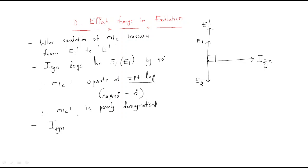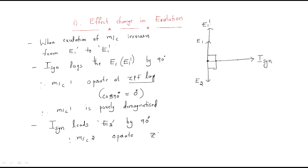The synchronizing current will be generated. Just observe — the synchronizing current leads E2 by 90 degrees. Using this we can write that machine two operates at zero power factor leading.